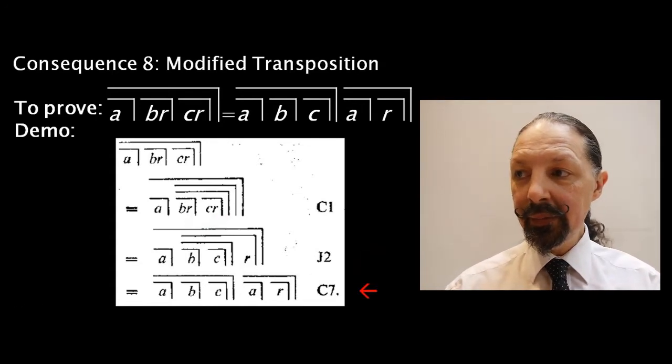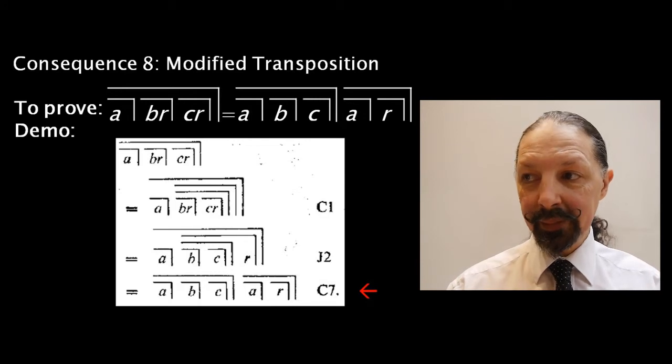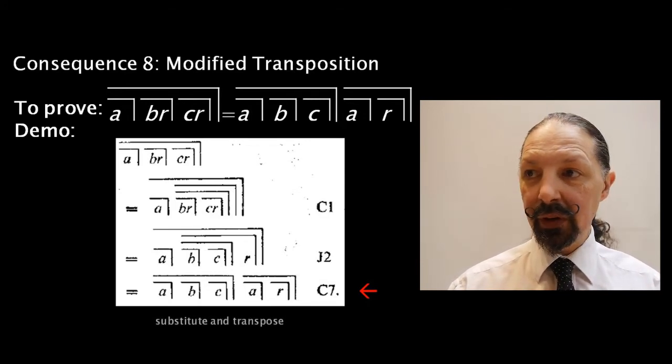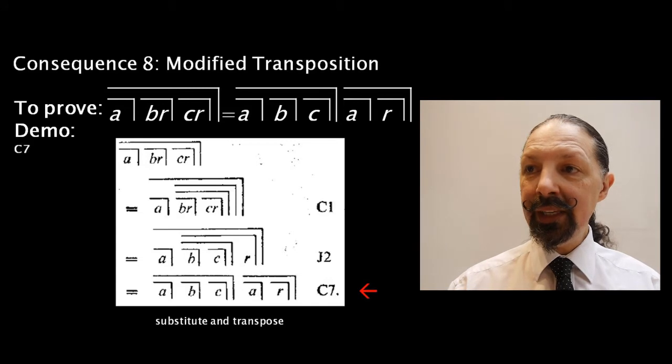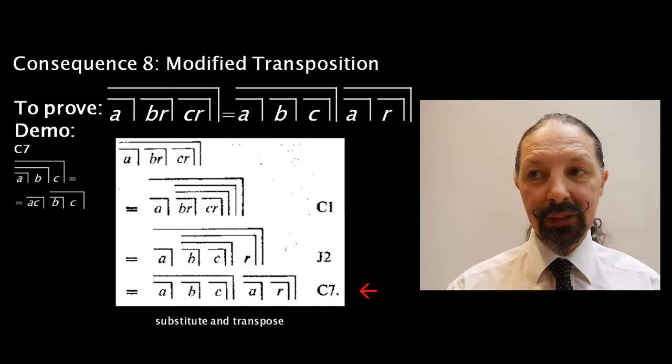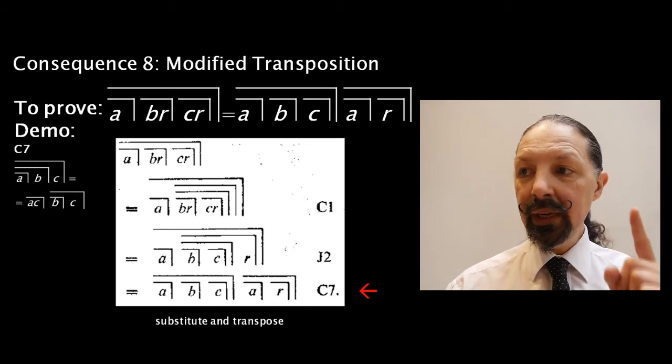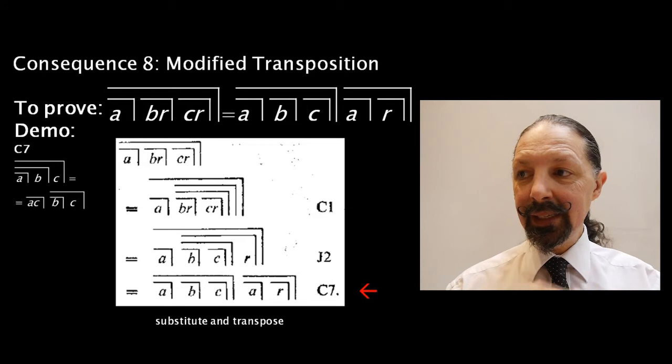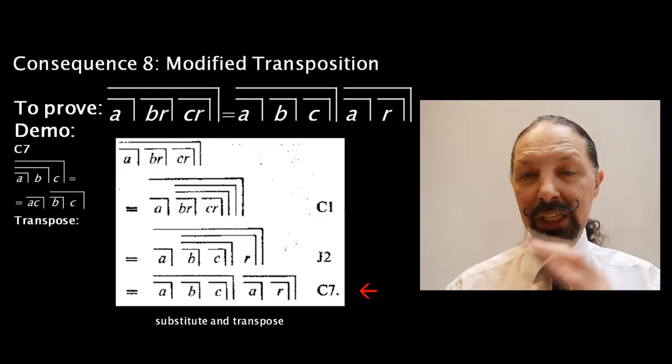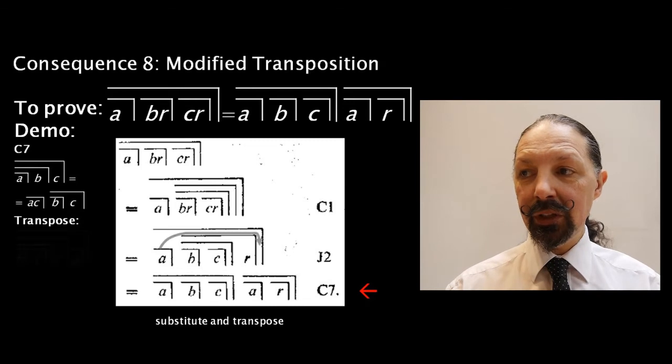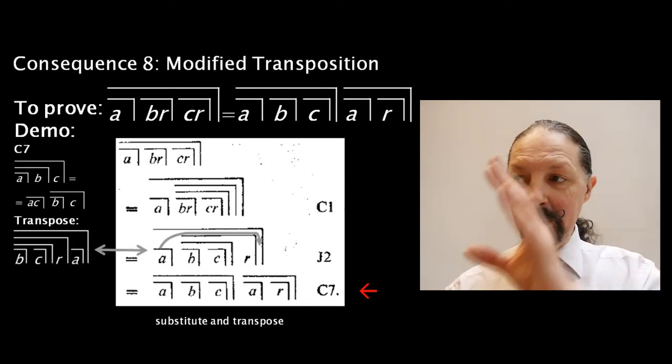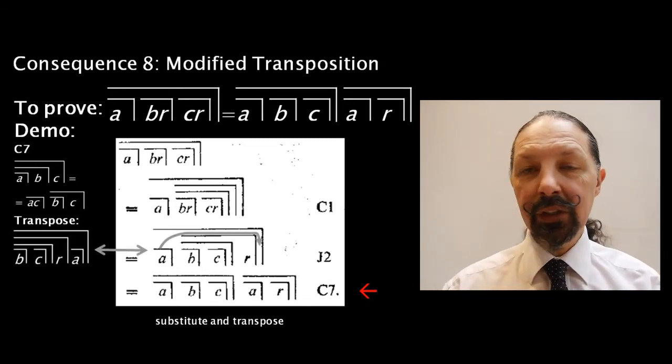Then we apply C7. What does that involve? In case you've forgotten, C7 looks like this. So we're looking for three nested things. We actually have them, but we need to transpose the equation to take the A mark to the right to see them more clearly.